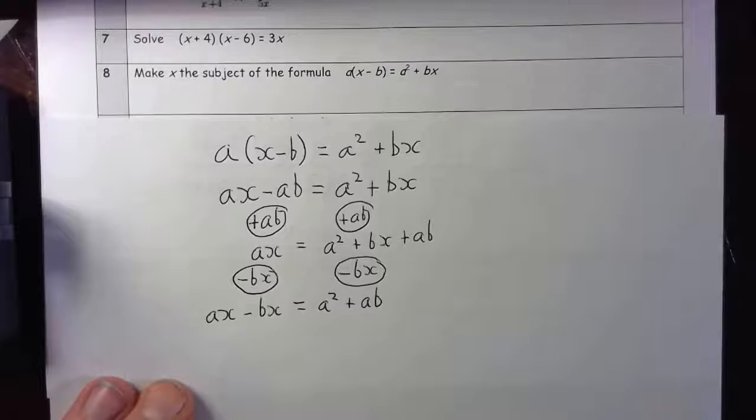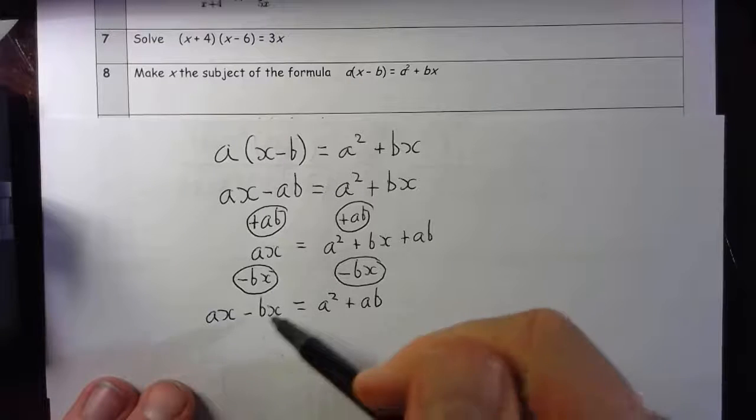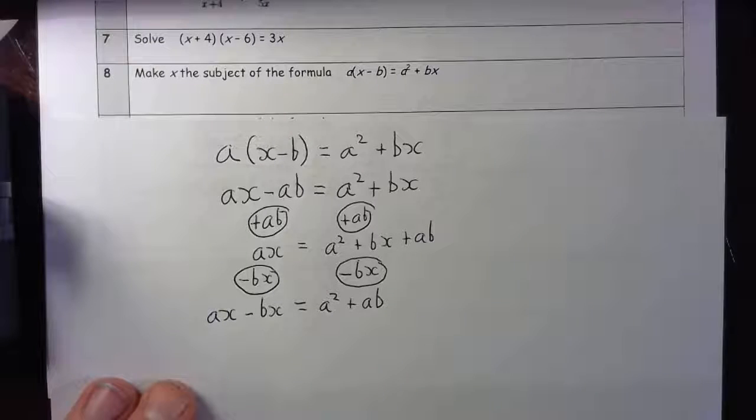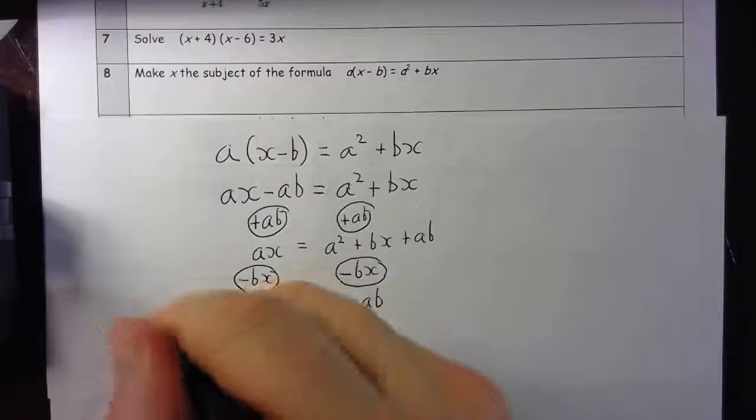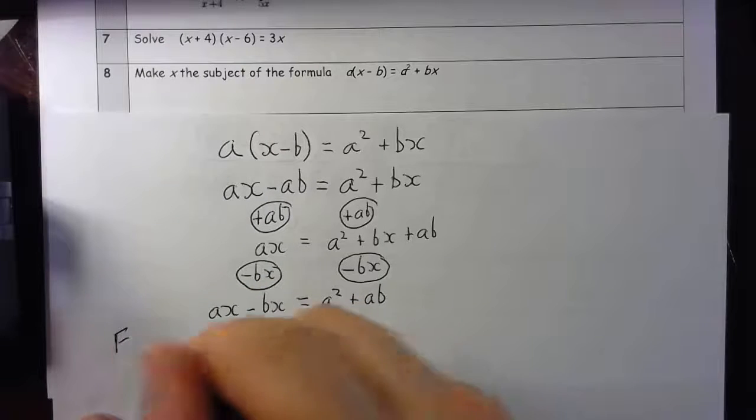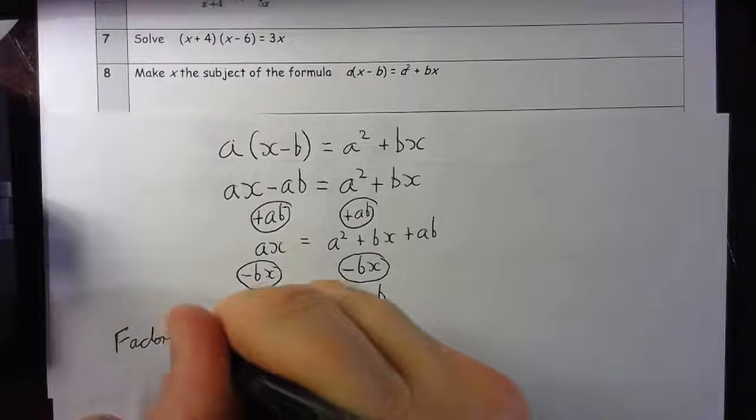a² + ab I could also factorize if I wanted to. I could take a out as a factor. But right now I'm concentrating on my x here, being part of both of these. And this is my key factorizing step. That's the only way I can split it out.